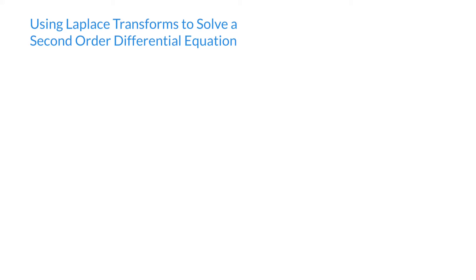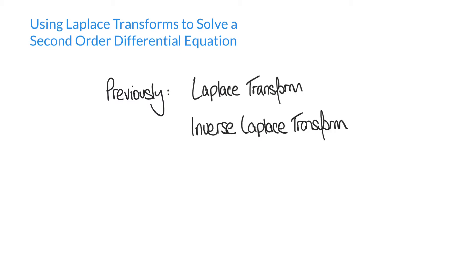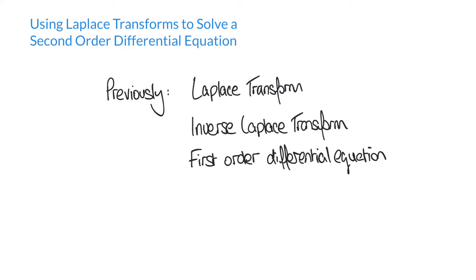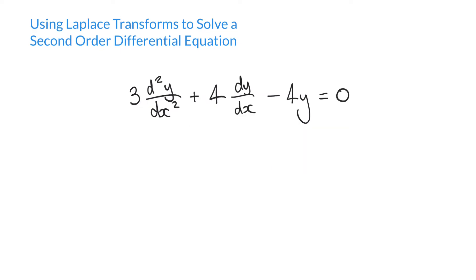In this video, we're going to use the principles of the Laplace transform to solve a second-order differential equation. Assuming you've already watched our videos introducing the Laplace transform, the inverse Laplace transform, and a first-order differential equation example, we'll jump straight in. The equation we're solving is 3d²y/dx² + 4dy/dx - 4y = 0, with initial conditions y = 0 and dy/dx = 6 when x = 0.